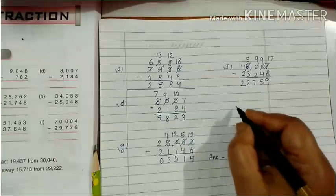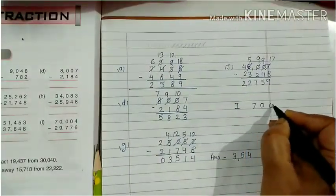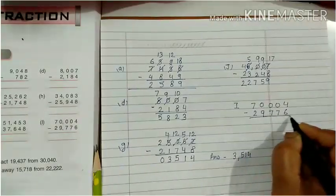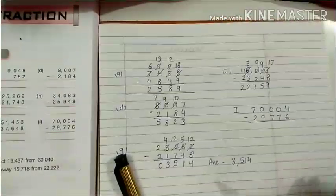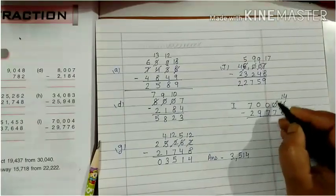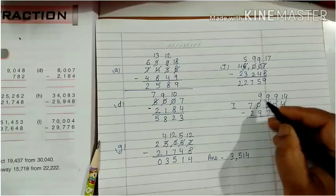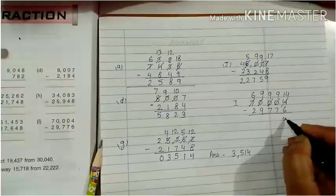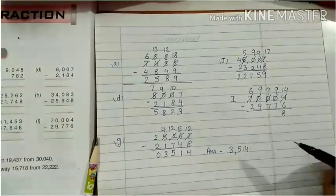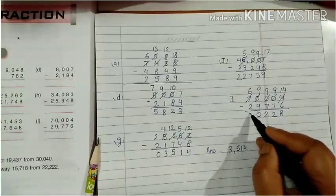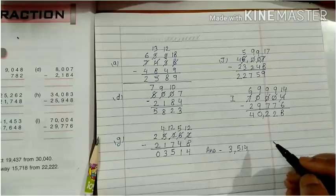Let's do Question I: 70,004 minus 29,776. Here 4 minus 6 is not possible, so it will become 14. The zeros become 9, 9, 9 through carrying and the ten-thousands becomes 6. 14 minus 6 is 8. 9 minus 7 is 2. 9 minus 7 is 2. 9 minus 9 is 0. 6 minus 2 is 4. So the answer is 40,228.